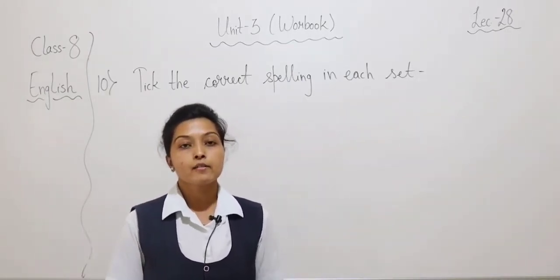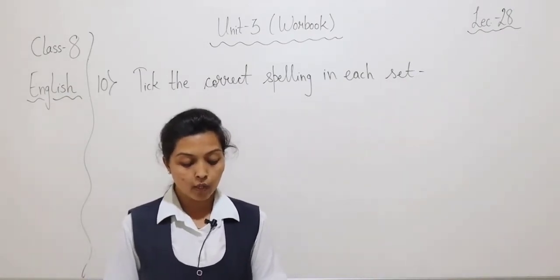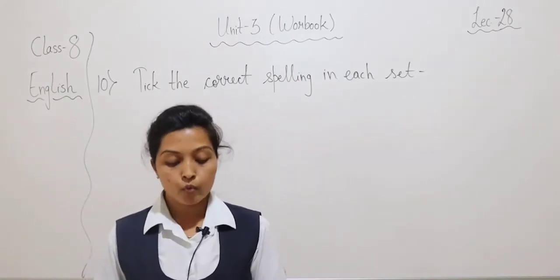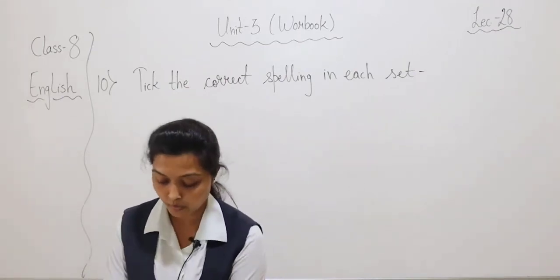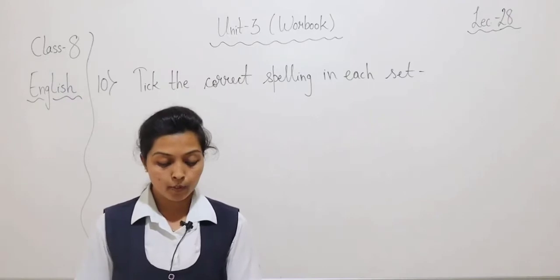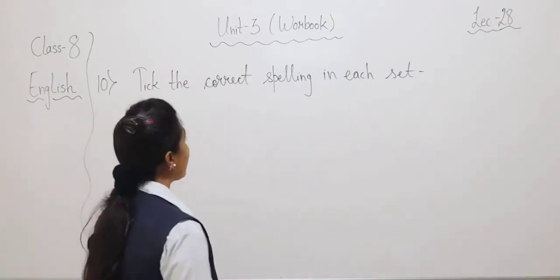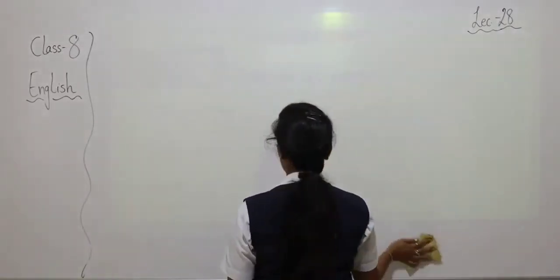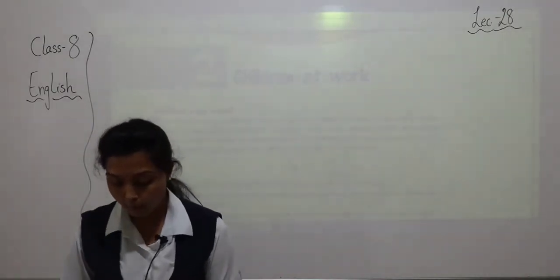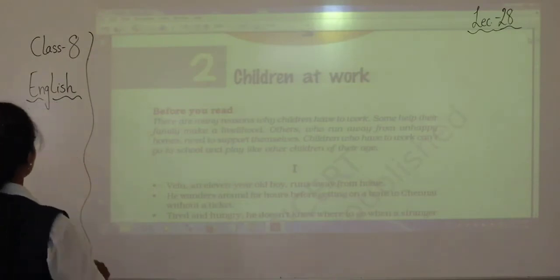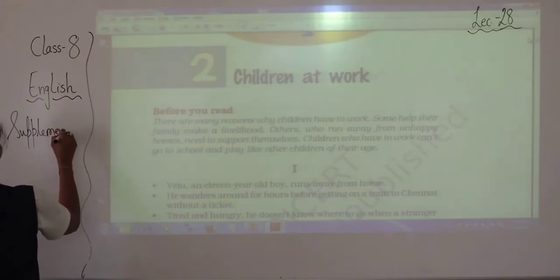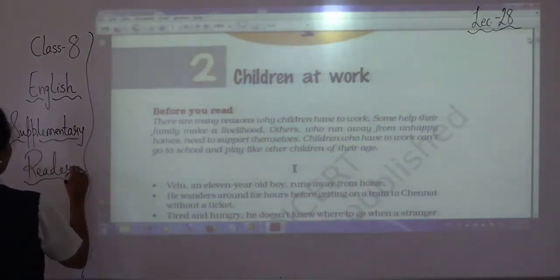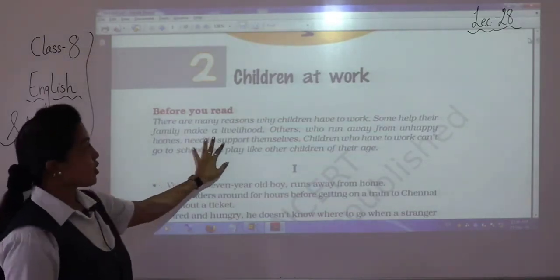Here our workbook exercise of Unit 3 is complete. Write down Exercise 11 in your notebook as instructed. Now we are going to start the second chapter from the supplementary reader — that is 'Children at Work'. Open your supplementary reader and open Chapter 2, 'Children at Work'.